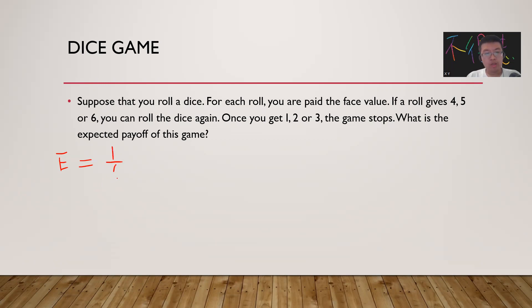So we get 1/6 times 1, plus 1/6 times 2, plus 1/6 times 3. These are the cases when we get one, two, or three and the game stops.